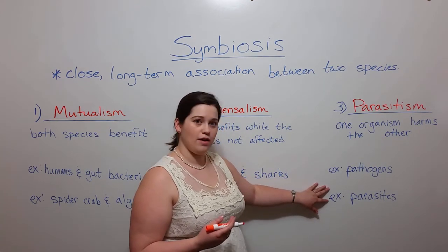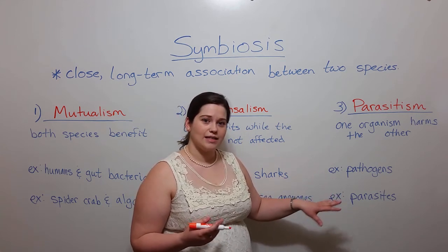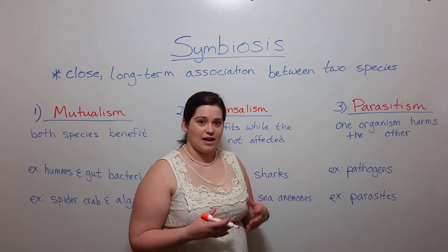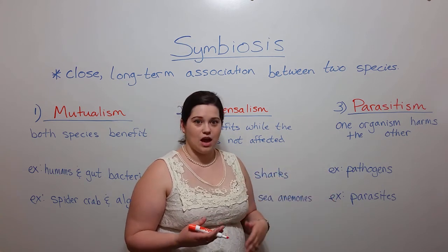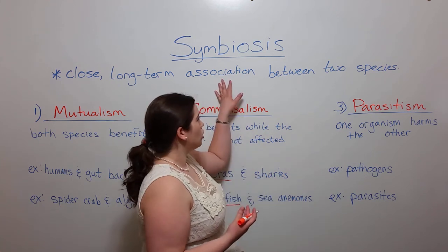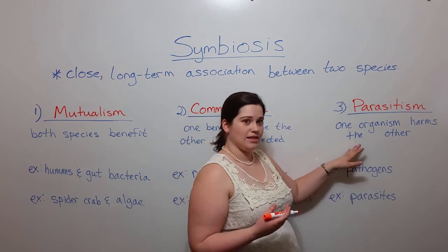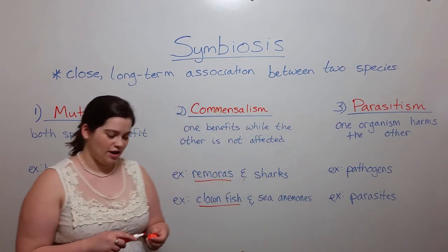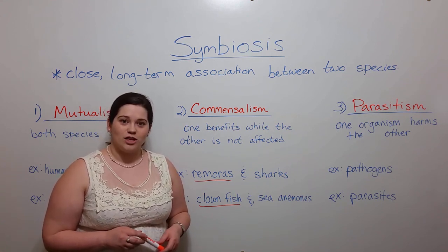There are also various types of parasites I'm sure you're familiar with — things like tapeworms, fleas, ticks — that live either on or in a host and are detrimental to that host. So both pathogens and parasites are symbiotic organisms that live in this close association with a host organism, but the host organism in this case is harmed. So these are the three types of symbiosis. I hope that this video has helped you to understand the differences in these three types, and thanks for watching Biology Professor.